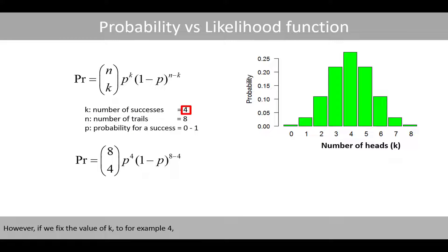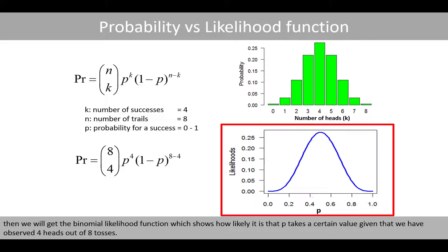However, if we fix the value of k to, for example, 4, and now change p from 0 to 1, then we will get the binomial likelihood function, which shows how likely it is that p takes a certain value given that we have observed four heads out of eight tosses.